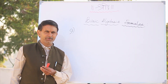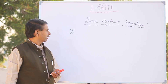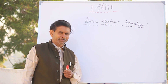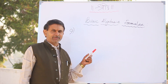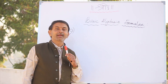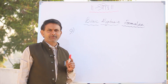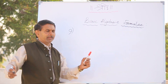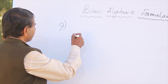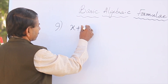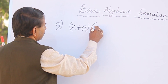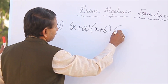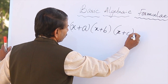We have discussed in the last video, under the heading of Basic Algebraic Identities or Formula, we have discussed x plus a into x plus b. I am confident that we have explained that — and now x plus a into x plus b into x plus c — we have three things.